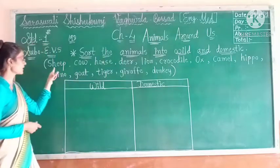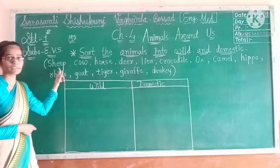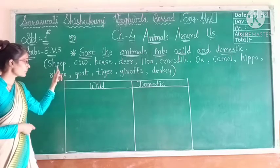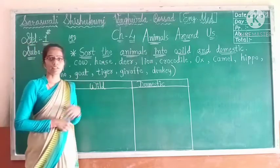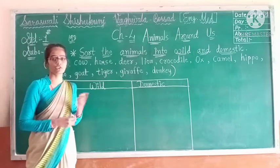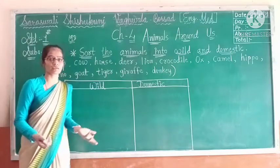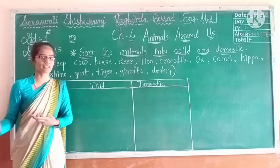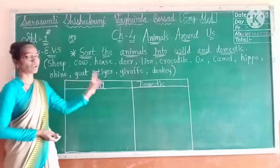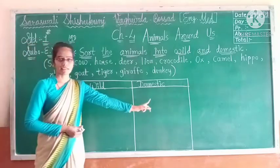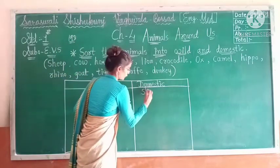The first name of an animal is sheep. So, is it domestic or wild? Sheep — we can find them in our surroundings and we can keep them in our homes as well as on our farms. So sheep is called a domestic animal, and we will write sheep here under domestic.